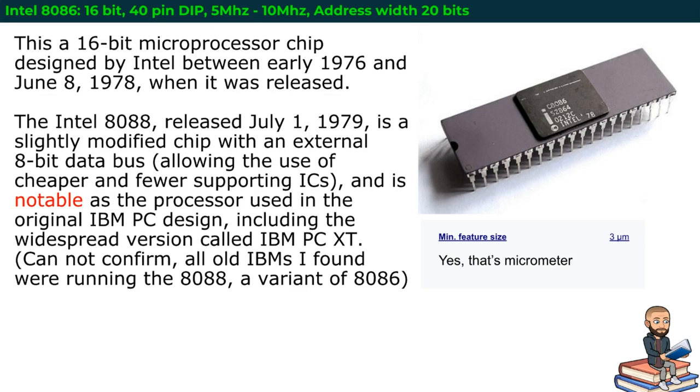It's a little bit of a history video, but mostly a technical video. Your first technical fact is that this is a 16-bit microprocessor. Intel moved from the 8-bit to the 16-bit, and that was pretty impressive. This chip was designed in 1976, and in June 8, 1978, it was released.